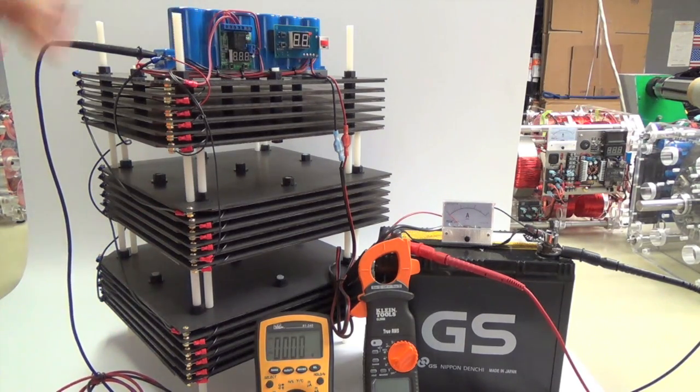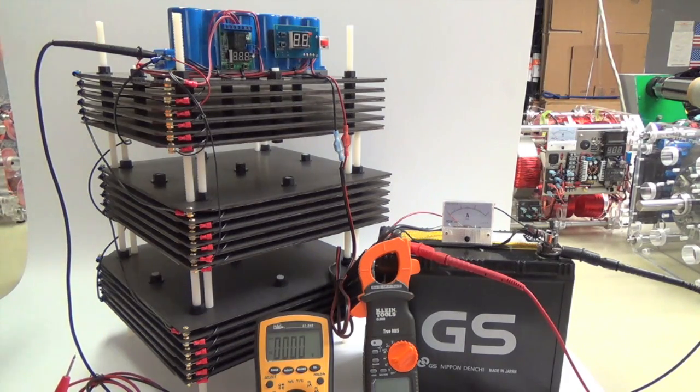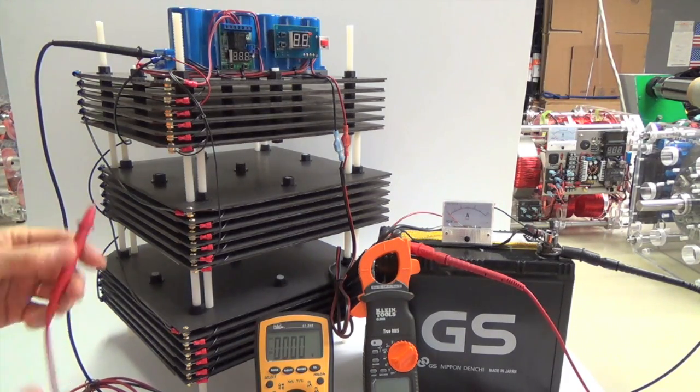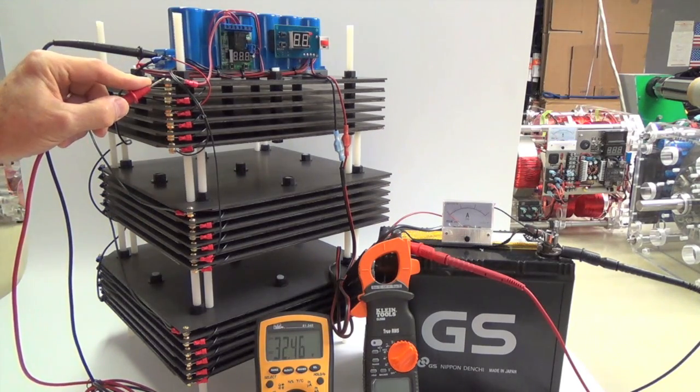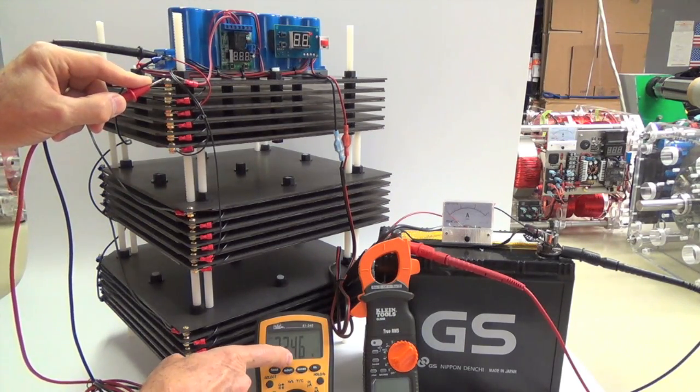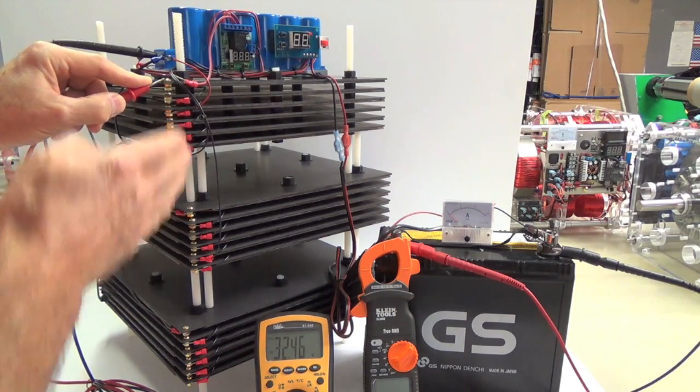I want you to see that the negative is direct connected to the cells and the positives have been disconnected so I can show you. Here it is: 32.46 volts. Again, that's open circuit voltage, and that's what we're going to be putting into the system. It's really interesting how it handles it.